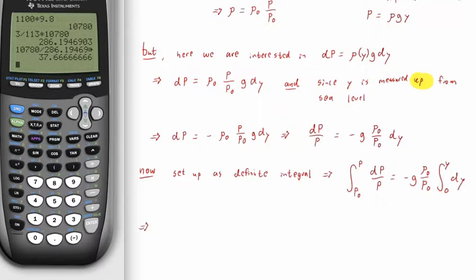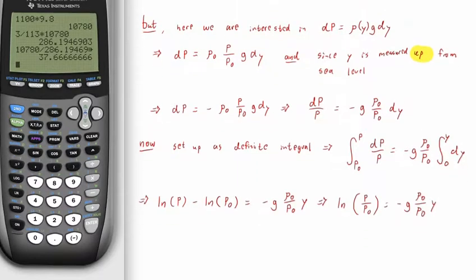Let's solve this integral. On the left-hand side, this is going to become the natural log, integrated from p naught to p. So natural log of p minus the natural log of p naught equals negative g rho naught over p naught times y. We're going to use a law of logarithms to make the minus become division within the logarithm. So ln(p over p naught) equals negative g rho naught over p naught times y.